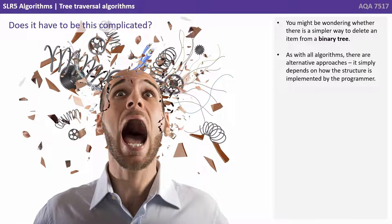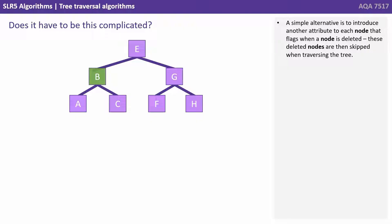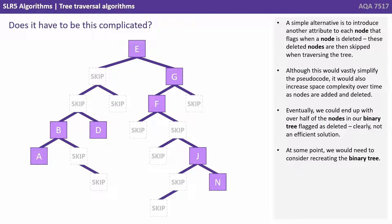You might be wondering whether there's a simpler way to delete an item from a binary tree. As with all algorithms, there are alternative approaches — it simply depends on how you structure the algorithm when you implement it. A simple alternative is to introduce another attribute to each node that flags when a node is deleted. These deleted nodes are then skipped when we traverse the tree. Although this would vastly simplify the pseudocode, it would also increase space complexity over time as nodes are added and deleted. Eventually we could end up with over half the nodes in our binary tree being flagged as deleted — clearly not an efficient solution. At some point we'd need to make a decision to recreate the binary tree.